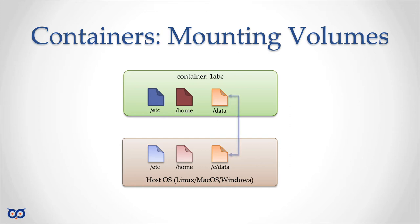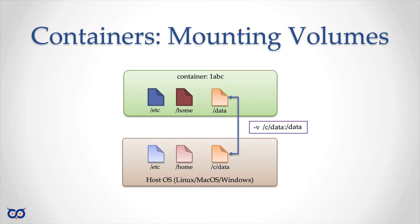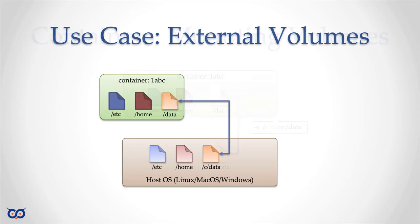Now, what if you had a directory on your host OS — let's call it /data — and a directory in a container also called /data, and instead of them being isolated from each other you want these two directories to be linked? Files in the host directory should appear in the container, and files written by the container to its /data directory should automatically appear on the host. Just like we use the `-p` option to map ports, we use `-v` to map a volume or directory from the host to the container. The host path comes first, then the container path.